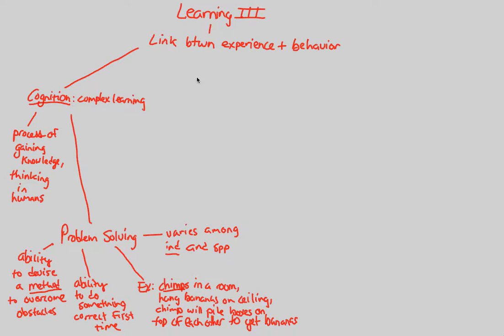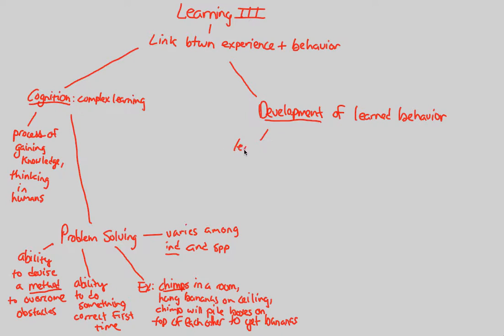Another complex type of learning is the development of learned behaviors. The length of time for learning to occur varies between individuals and species. A really cool example of this is sparrows — the amount of time it takes them to learn a specific behavior illustrates just how much development plays a role in understanding learning and behavior.